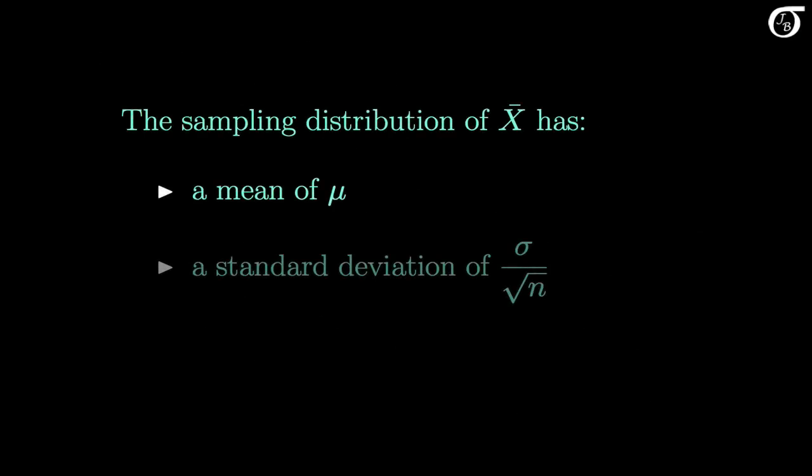In summary, the sampling distribution of the sample mean X-bar has a mean of mu — the mean of the population from which we are sampling — and a standard deviation of sigma divided by the square root of the sample size n, where sigma is the standard deviation of the population.